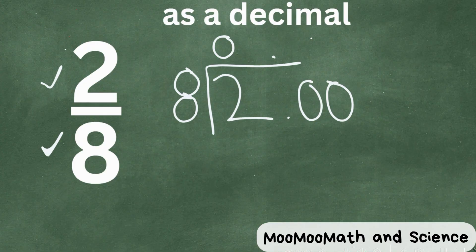So let's go ahead and move the decimal up, and eight goes into 20 two times. Two times eight is 16. 20 minus 16 is 4.